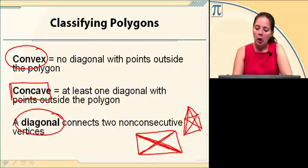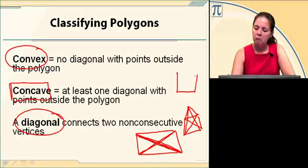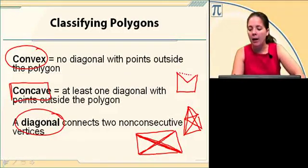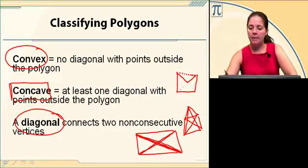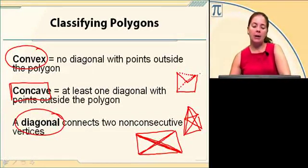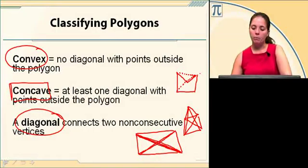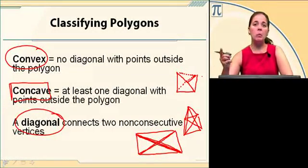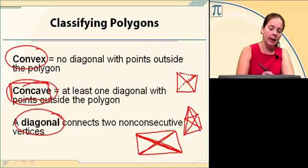An example of a concave polygon: this is a concave polygon. I have these diagonals. This diagonal happens to be completely on the outside. If any part of the diagonal is on the outside, it is a concave polygon. Even though you have diagonals on the inside, it just takes one point of one diagonal on the outside to make it concave.